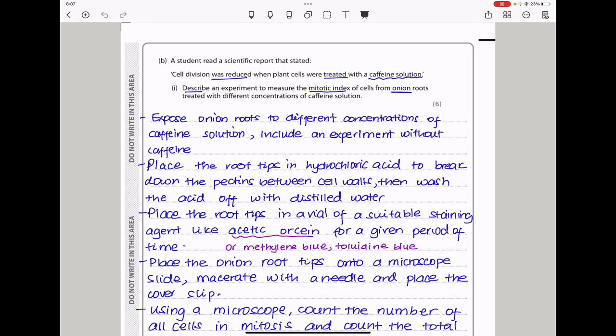In part B, they say a student read a scientific report that stated cell division was reduced when plant cells were treated with a caffeine solution. They want you to describe an experiment to measure the mitotic index of cells from onion roots treated with different concentrations of caffeine. Because we are varying the concentration of caffeine, this is going to be the independent variable. However, because this is about mitotic index, we have to use hydrochloric acid in order to break down the pectins and acetic orcein, which is going to be a good staining agent.